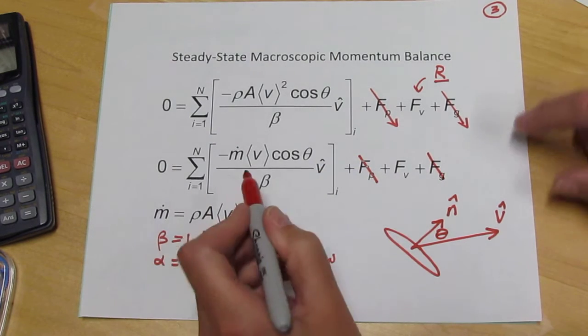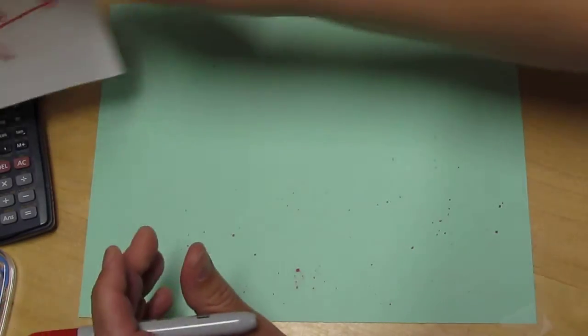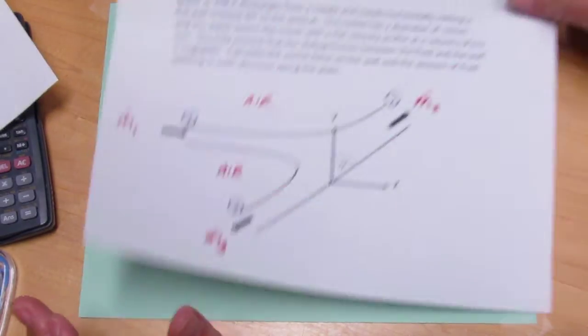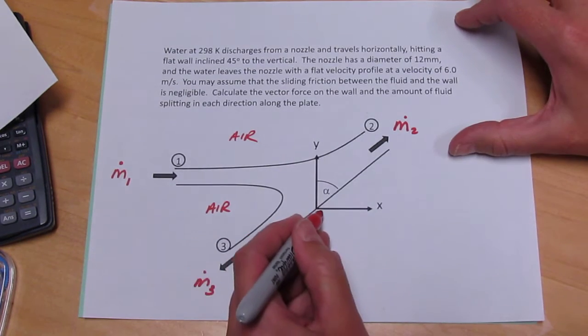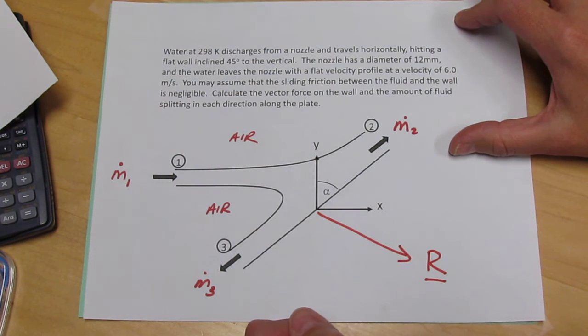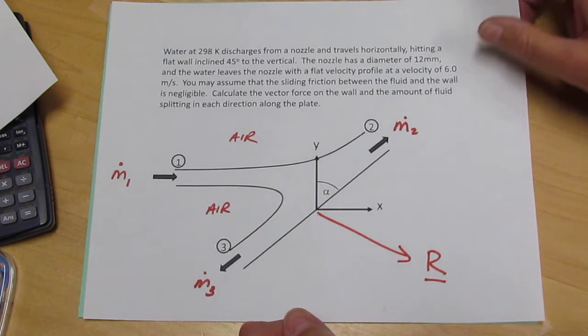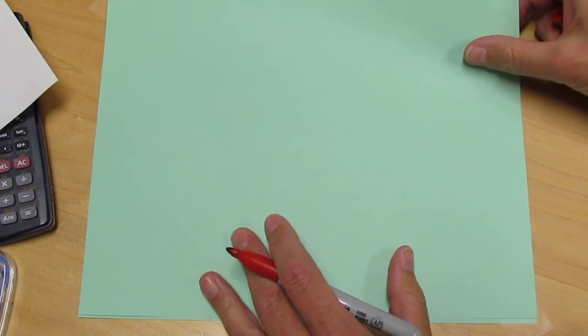So now we can apply this for the three streams that make up our flow and for that R vector, which is the force on the wall that we're looking for. We don't know the direction of R, but we know there is a force on the wall.